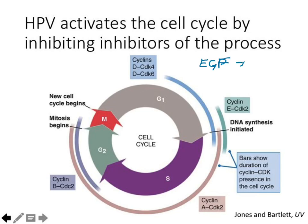For example, if we have EGF — epidermal growth factor — and it binds onto the EGFR on cells, that triggers a signal transduction pathway, a kinase cascade. Ultimately, the end result is to increase the expression of what we call the cyclins. The main one we're looking at today is cyclin D. Cyclin D binds to two different cyclin-dependent kinases: CDK4 and CDK6. When a cyclin binds to a CDK, it activates the CDK and promotes transition from G1 into S phase.